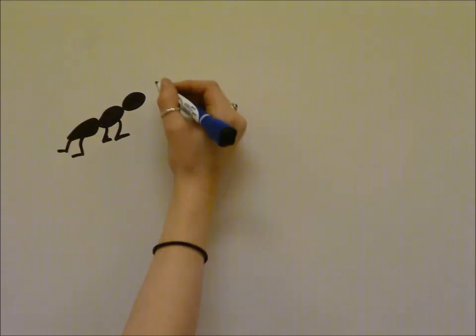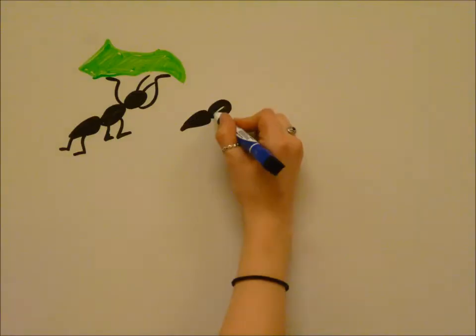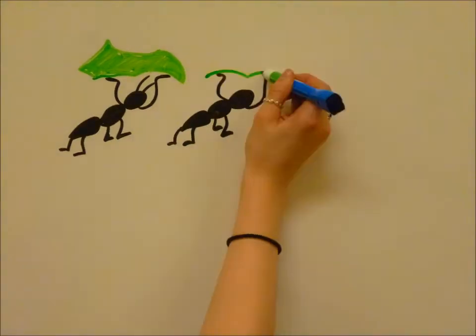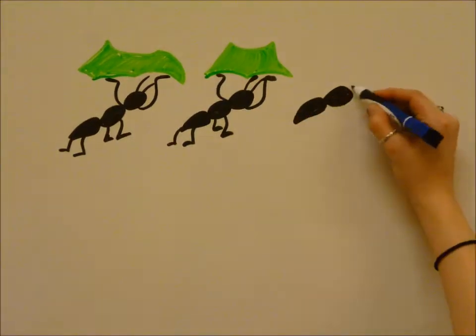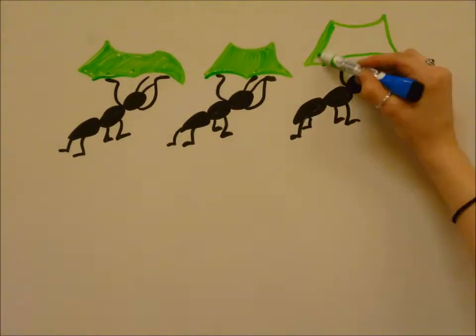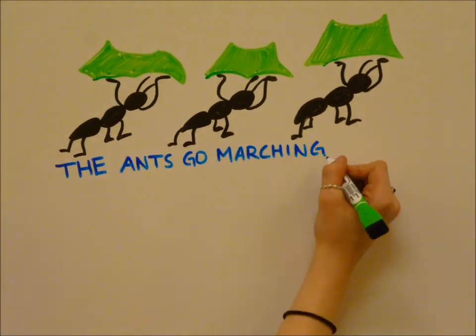Have you ever seen those little ants that march in a row carrying leaves triple their size? Did you know they aren't collecting leaves to eat them? In fact, these leafcutter ants are foraging leaves to feed another organism.